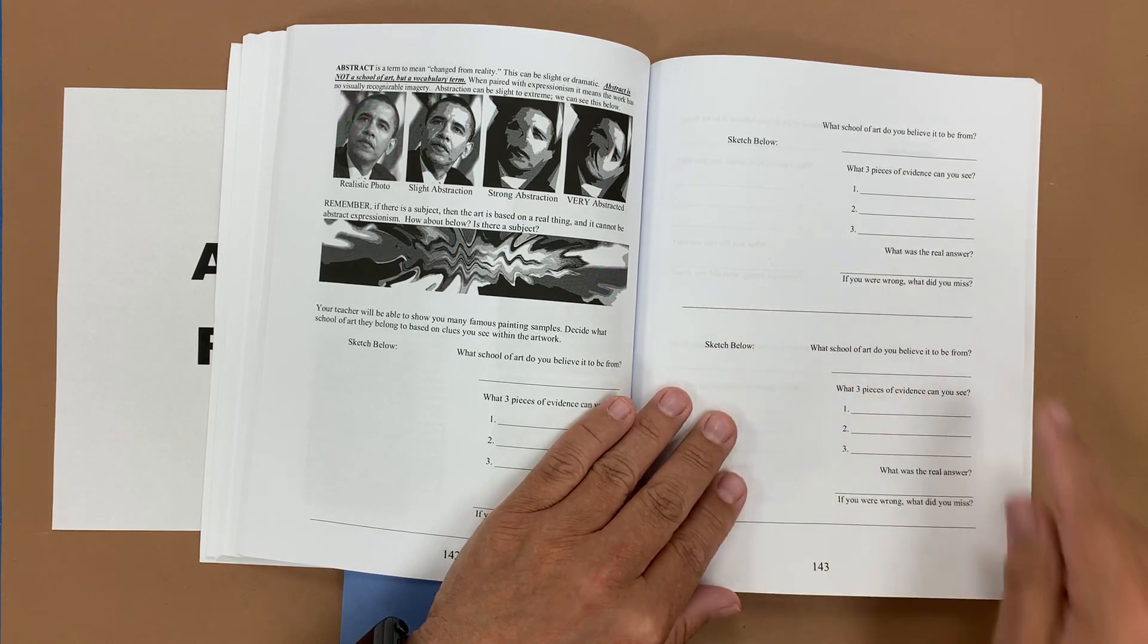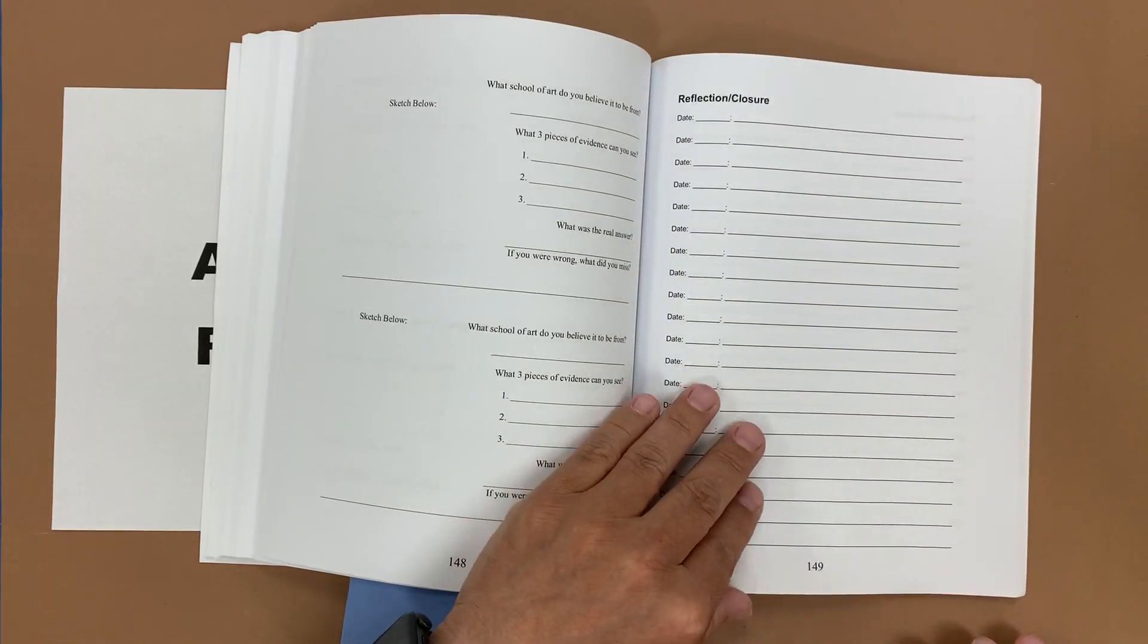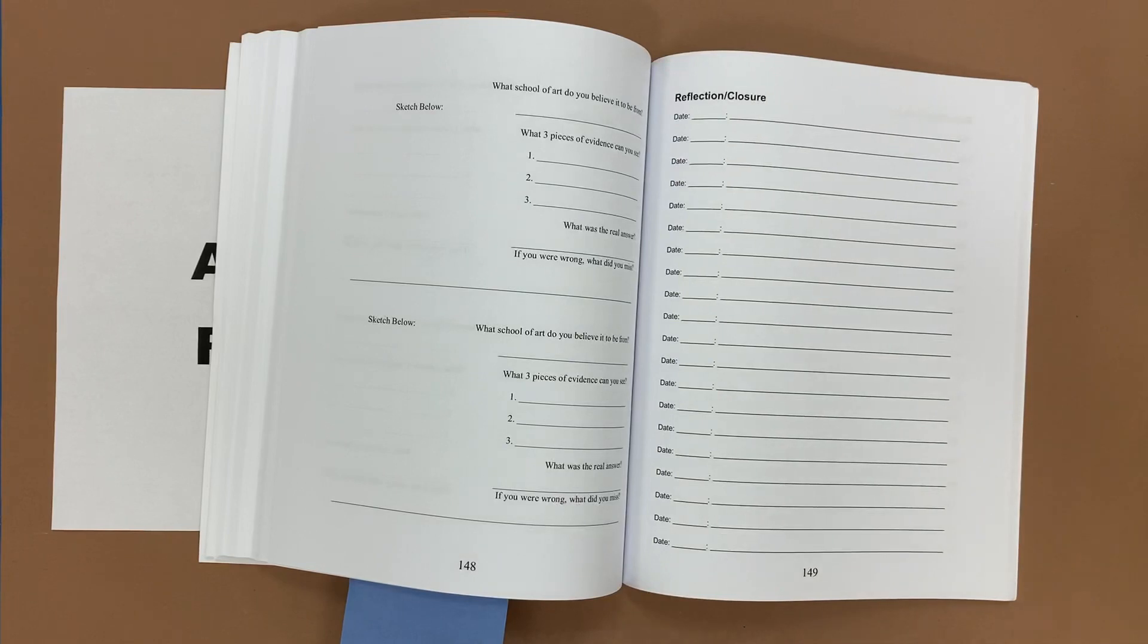And if you got it wrong, what did you miss? And then they would write that out there. So there's plenty of space for them to explore that and then reflection and closure pages.